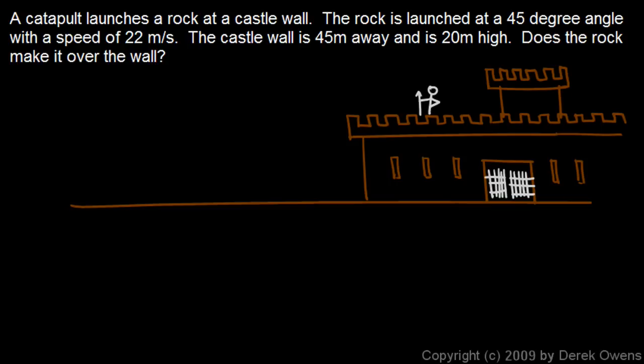In this problem, we're told that a catapult launches a rock at a castle wall, and the rock is launched at a 45-degree angle with an initial speed of 22 meters per second. The castle wall is 45 meters away and is 20 meters high.